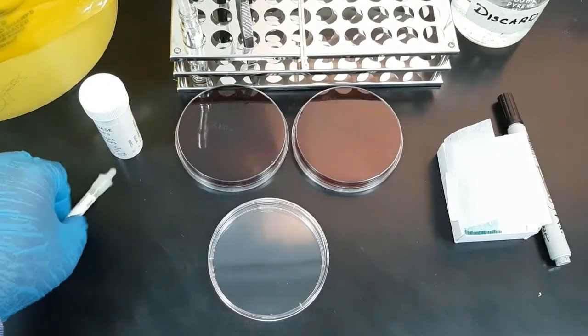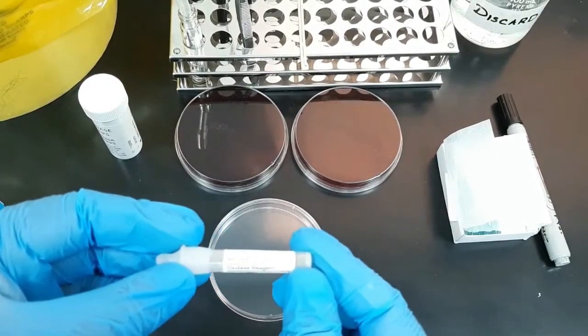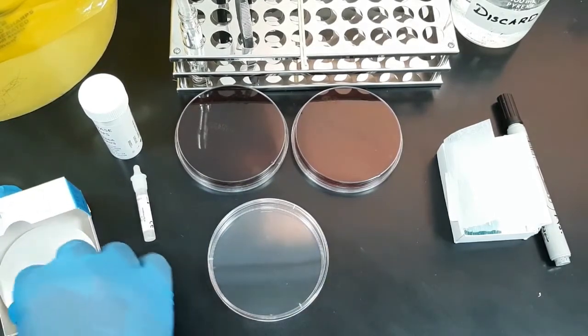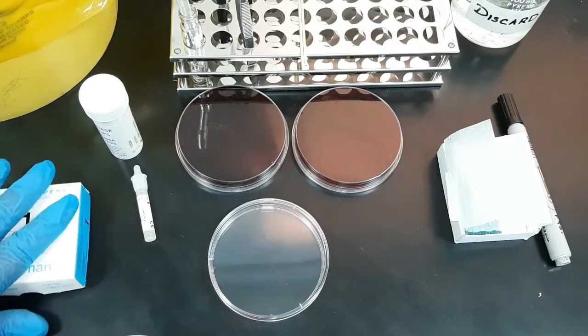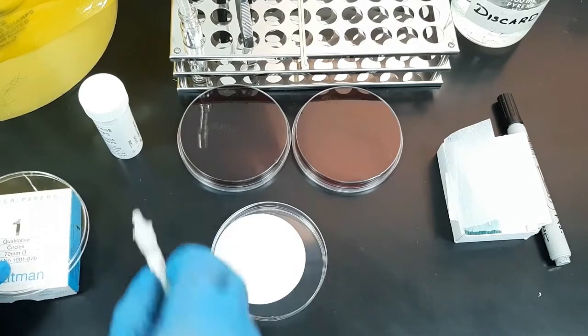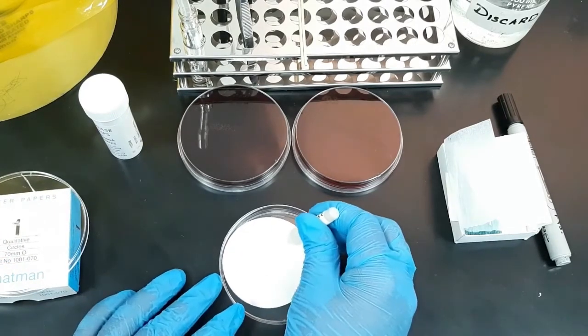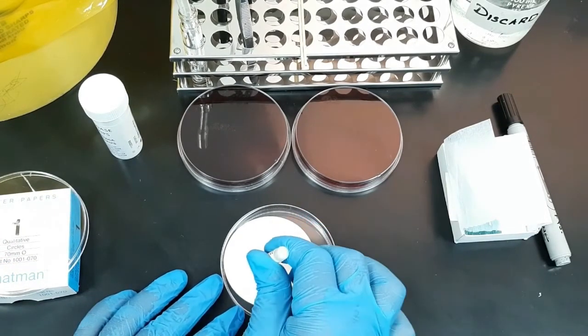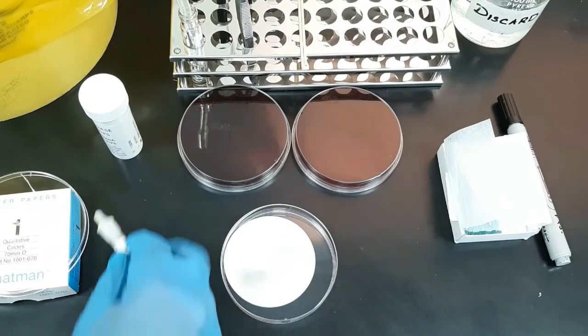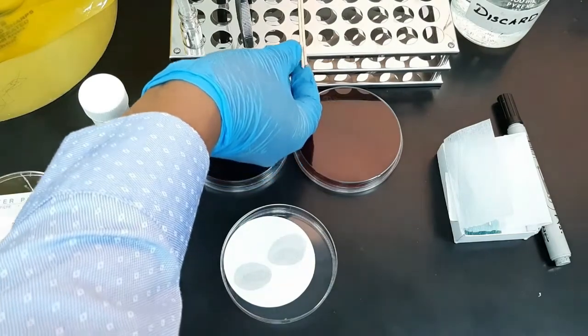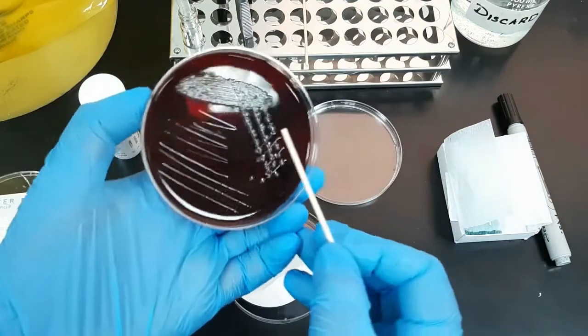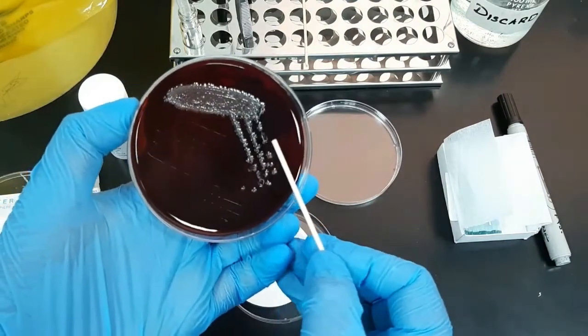Now I am going to show you another method using oxidase reagent. First, place a piece of filter paper into an empty petri dish. Transfer some drops of the oxidase reagent to two sides of the filter paper. Then pick the bacteria from the culture plate with a sterile wooden stick and rub the sample onto the oxidase reagent on the filter paper.